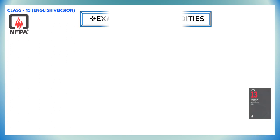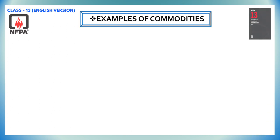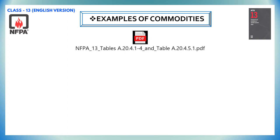We shall go through some examples of commodity classification. Please note that there is no need to remember any type of commodities. We have to know how to check NFPA 13 table A.20.4.1-4 and table A.20.4.5.1. Based on these tables, we can identify the commodity classification.